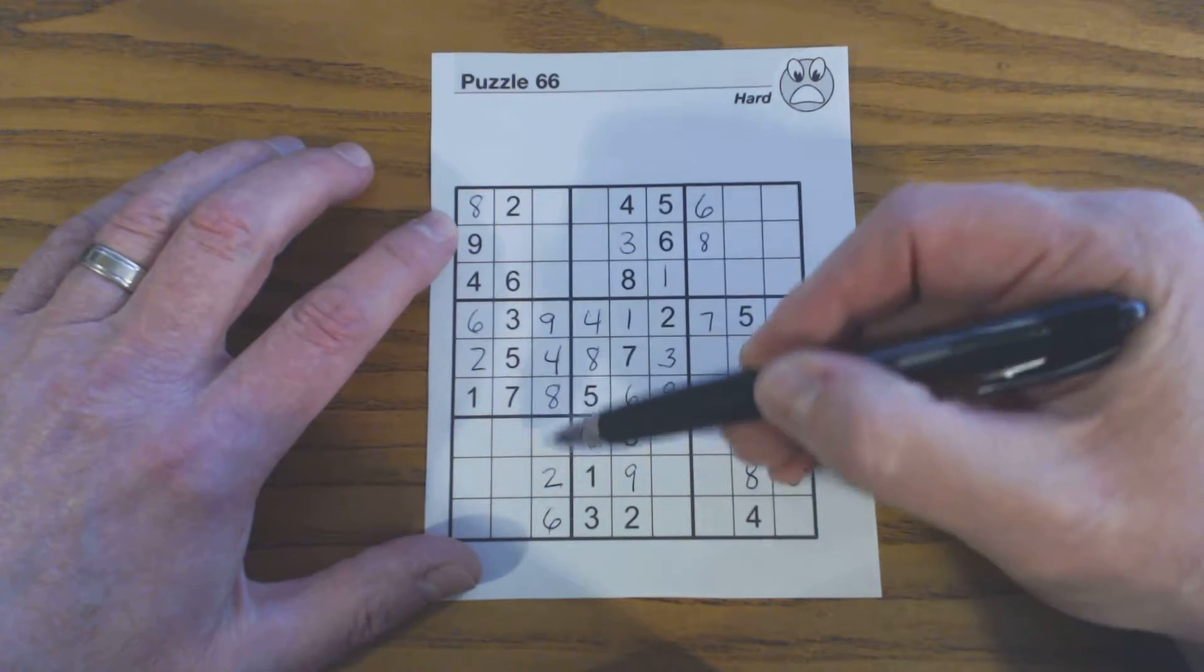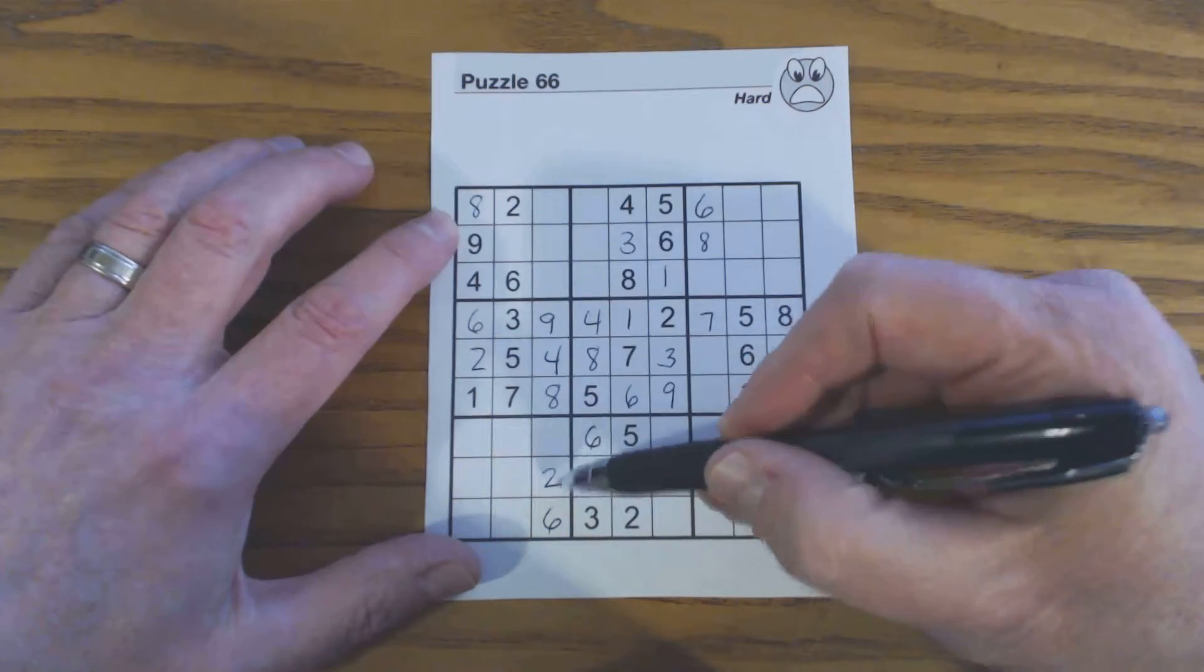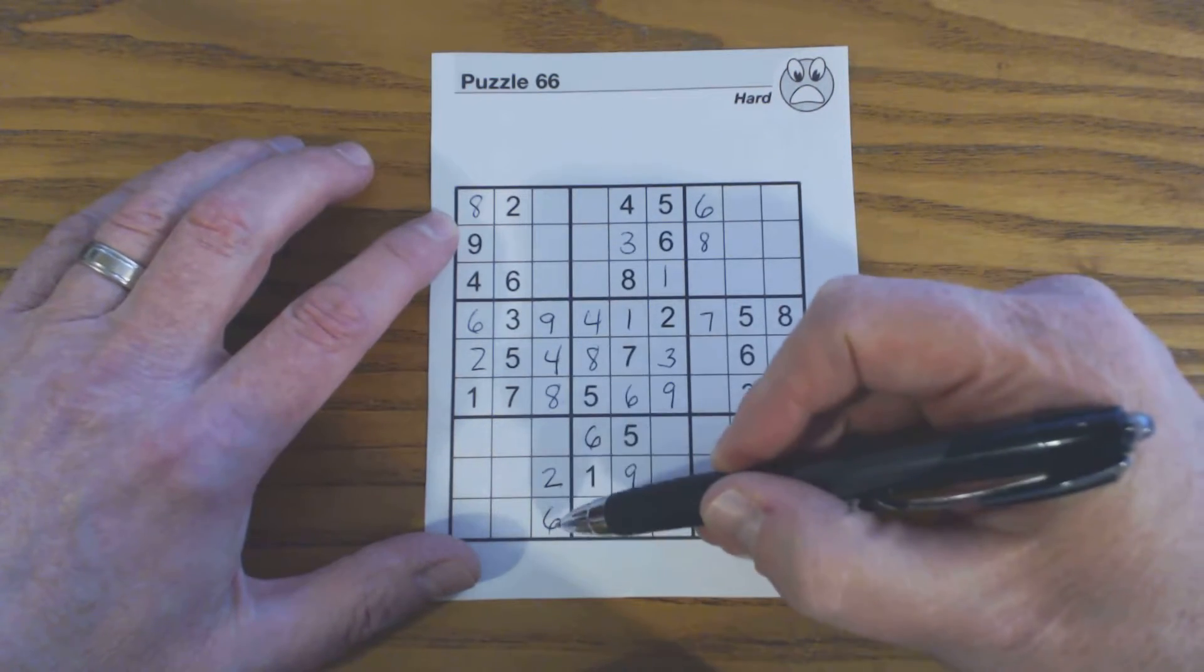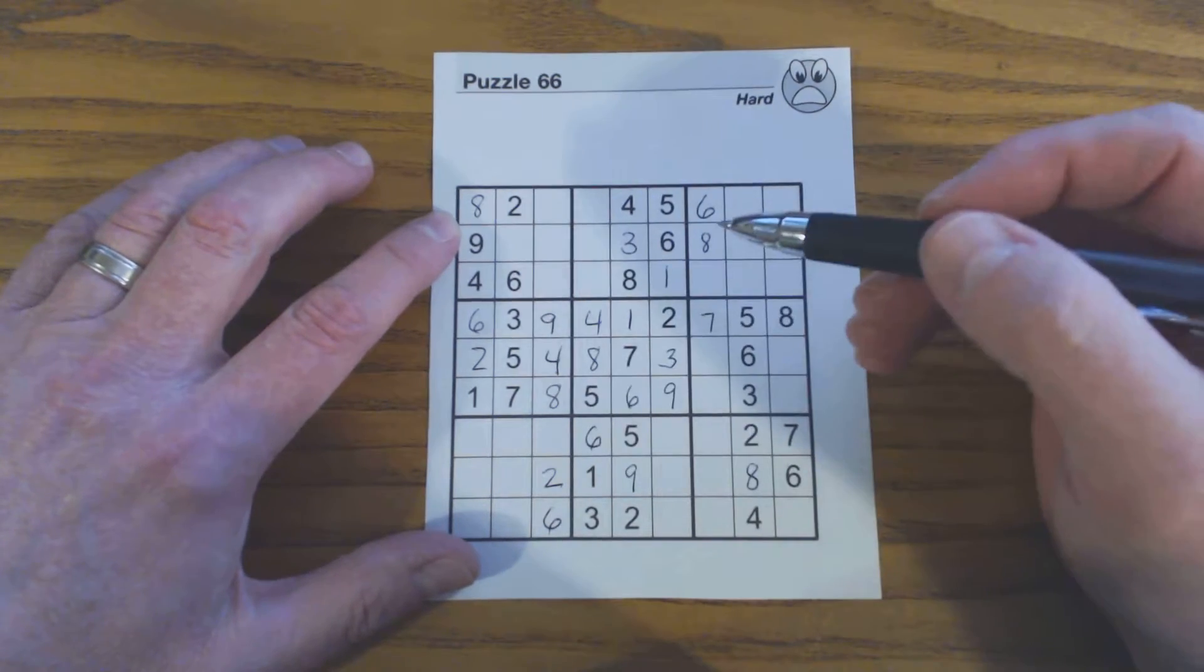Right now the only numbers that are missing in this column are 1, 3, 5, and 7.